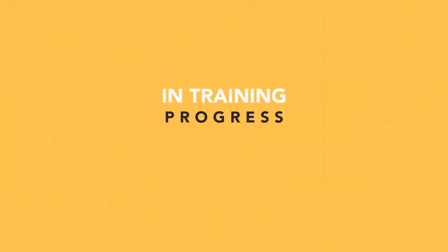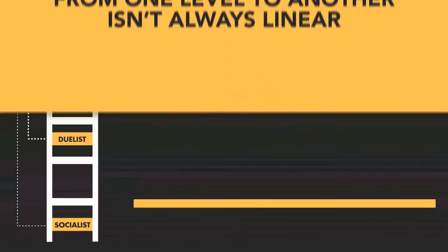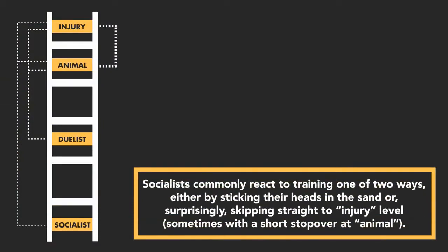In training, progress from one level to another isn't always linear. Socialists commonly react to training in two ways, either by sticking their heads in the sand or, surprisingly, skipping straight to injury level, sometimes with a short stopover at Animal.